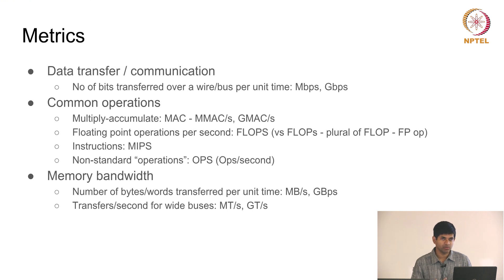The number of multiply-accumulates per second — typically MMACS, millions of multiply-accumulates per second, or GMACS, billions of multiply-accumulates per second — are common metrics.